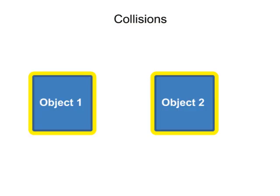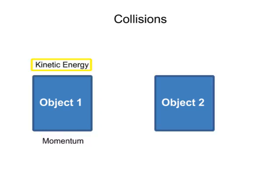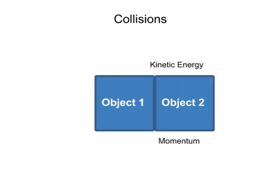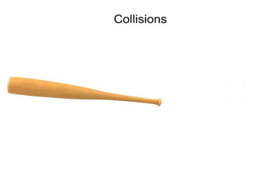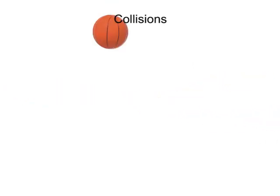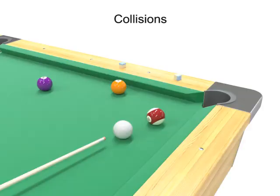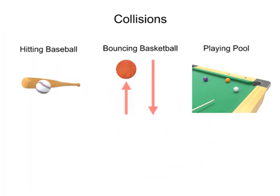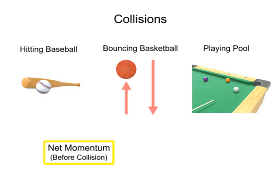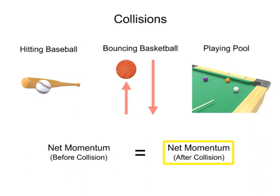Collisions happen when two or more objects come into contact with each other and a transfer of momentum and kinetic energy occurs. Collisions occur every time you hit a baseball, bounce a basketball, or play pool. When objects collide in the absence of external forces, they form a system in which the net momentum of both objects before the collision equals the net momentum of both objects after the collision.